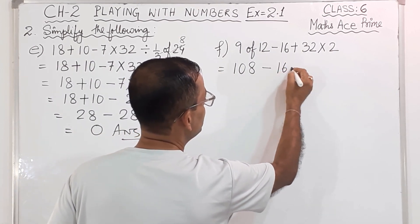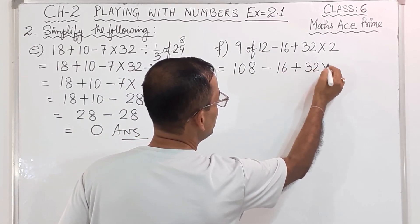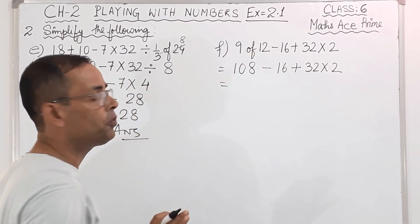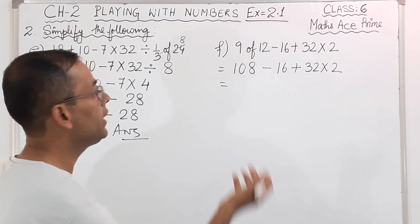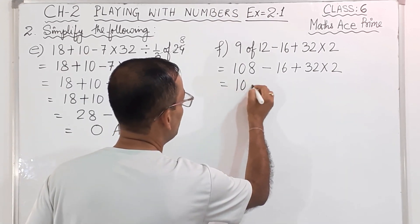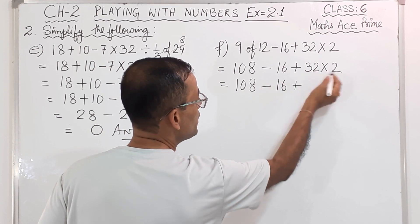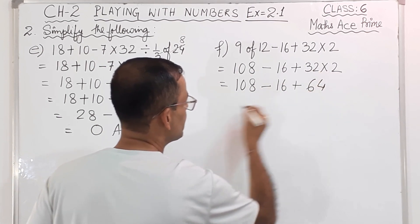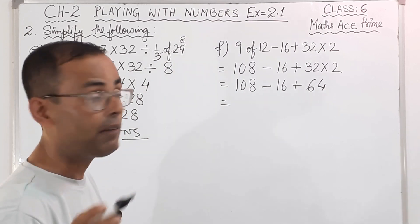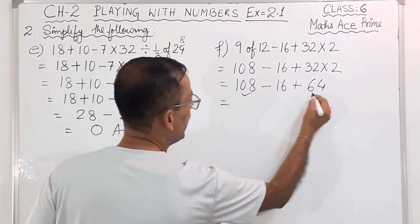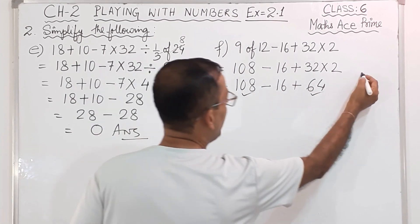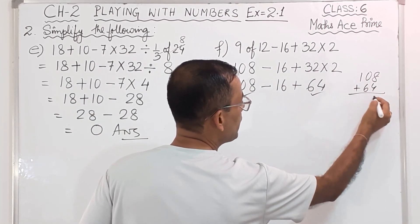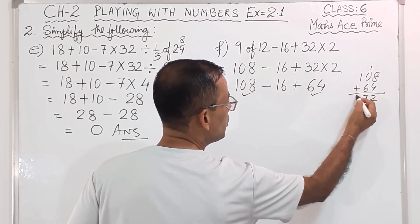Then minus 16 plus 32 into 2. Now after this we will multiply because 'off' done, division is not there, after that multiplication. So 108 minus 16 plus — this 2 I can multiply — so 2 twos are 4, 2 threes are 6. Now after that we have to do addition, so this one and this one I can add: 108 and 64 — 8 plus 4 is 12, 1 carry, 6 plus 1 is 7 — so 172.